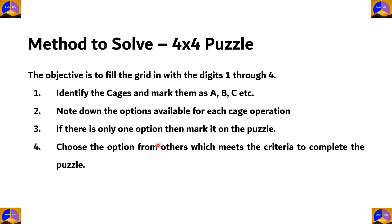This is our method to solve a 4x4 puzzle. The objective is to fill the grid with the digits one through four. First, we'll identify the cages and mark them as A, B, C, etc. Second, we note down the options available for each cage's operation. Third, if there is only one option, we mark it on the puzzle.